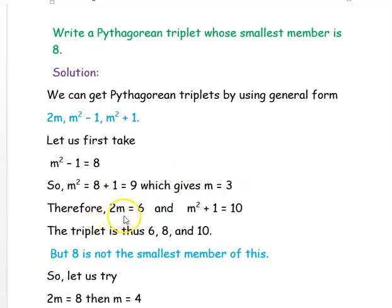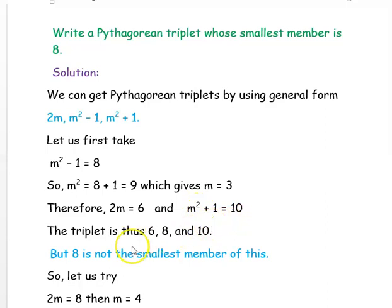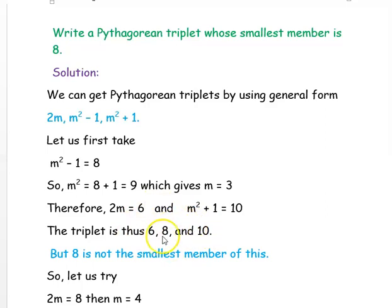With M = 3, the value 2M = 6. The third member is M²+1 = 9+1 = 10. So the triplet obtained is 6, 8, and 10. But in our question, we need 8 as the smallest number. Here, 6 is the smallest number, so this is not the answer, though it is a valid triplet containing 8.